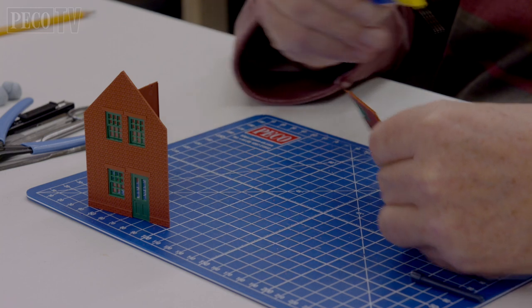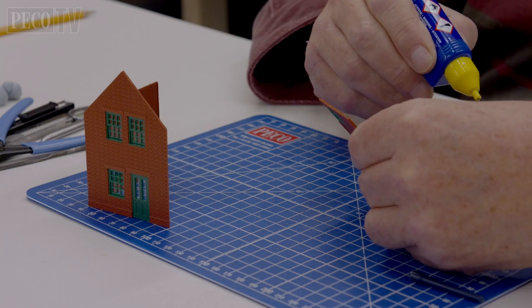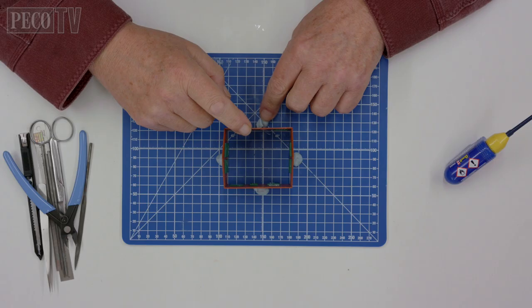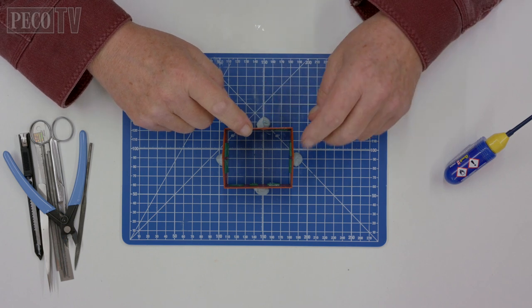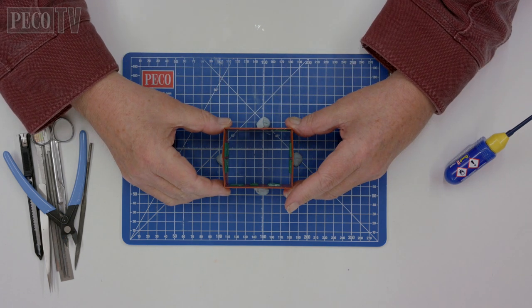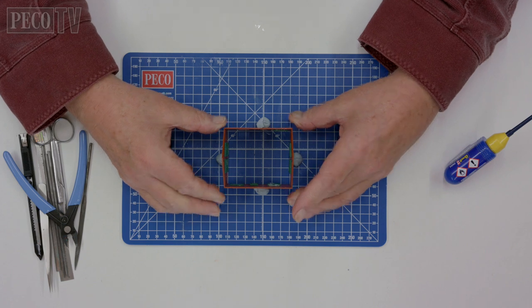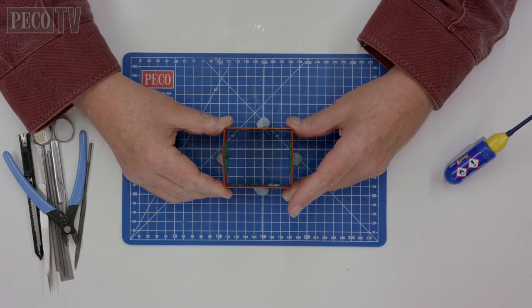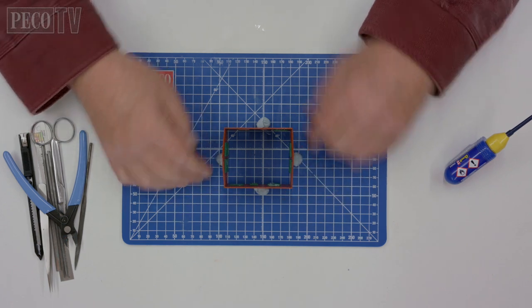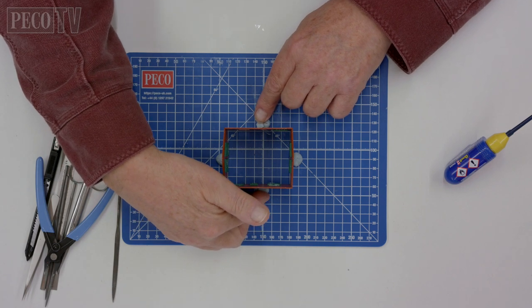Glue the four walls together for the two station house buildings ensuring the corners are square. This can be done by using the white lines on your cutting mat. I would also recommend using blue tack balls propped against the walls to keep them upright until the adhesive has dried and set.